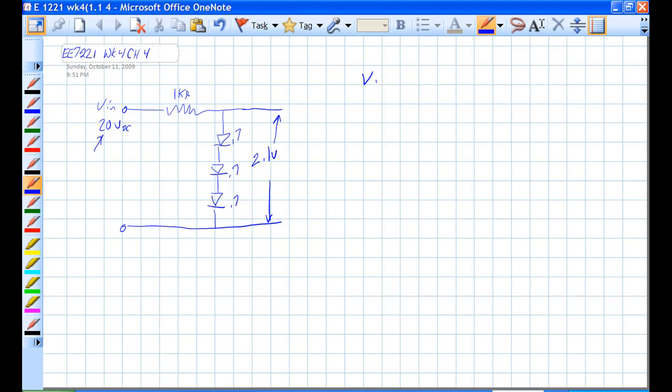Voltage across 1K ohm resistor is equal to 20 volts minus 2.1 volts is equal to 17.9 volts. So we have 17.9 volts.